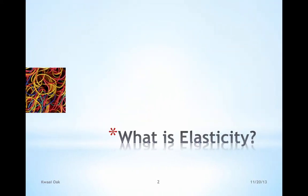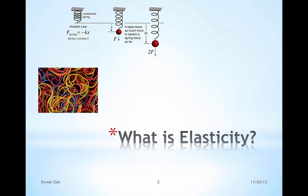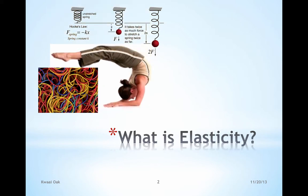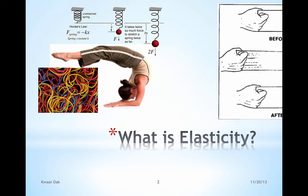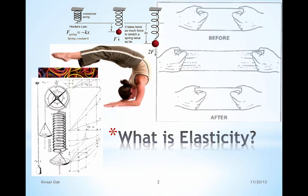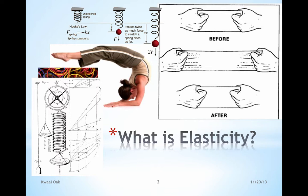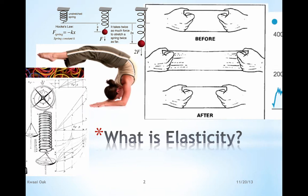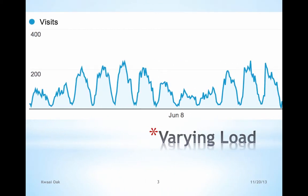First of all, what is elasticity? You may recall sitting through your first physics lesson covering Hooke's Law, which describes the property of elasticity — how a system, when subjected to a load, can stretch or expand, and then when the load is taken away, it reduces. Typically the displacement is proportional to the amount of the load. That analogy is brought to bear on cloud systems, and the ability of a cloud to handle a varying load is called elasticity. This is a Google Analytics chart from one of our clients — an interesting study of how traffic varies on a daily basis.